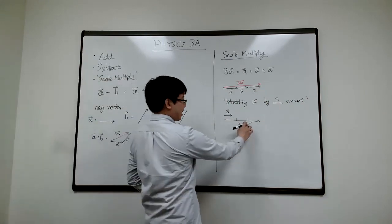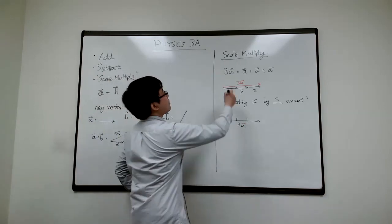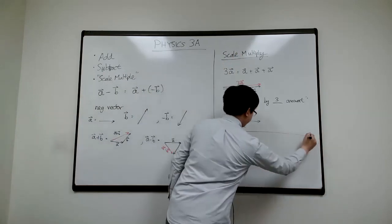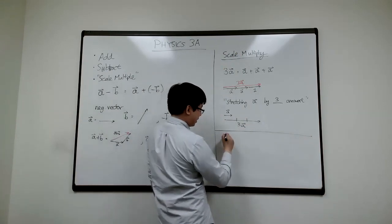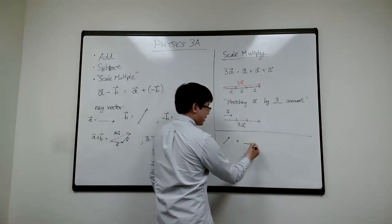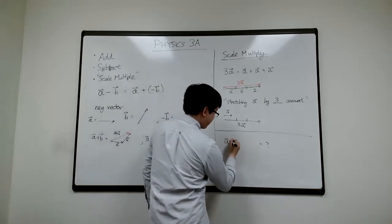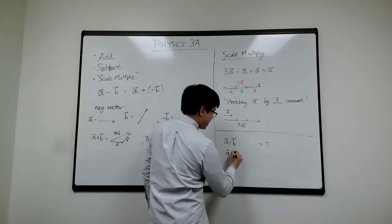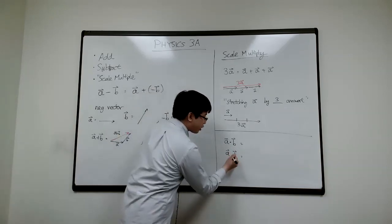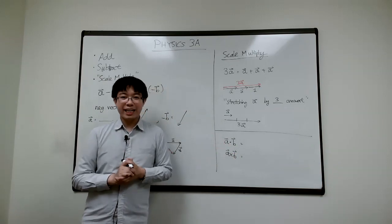Those are the key things to cover today. A couple of FAQs: scalar multiplication is taking something and scaling or stretching it. What I haven't talked about yet is how to actually multiply an arrow by another arrow. It turns out there are two ways to do that: something called the dot product and the cross product. Unlike numbers, where dot and cross mean the same thing, for arrows these have two different meanings.